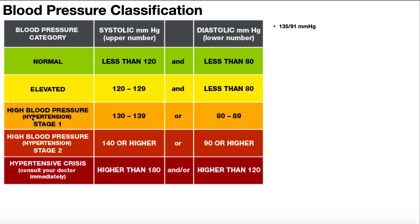For hypertension, stage one has the systolic blood pressure between 130 and 139 millimeters of mercury, or the diastolic can be between 80 and 89 millimeters of mercury.